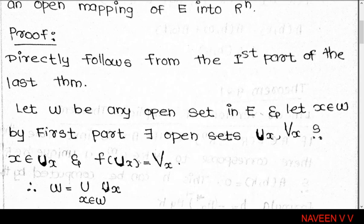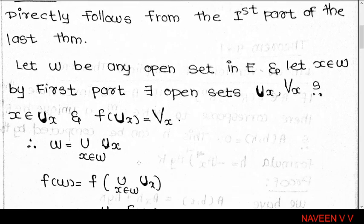Theorem 9.25 proof: f'(x) is invertible for all x belonging to A. By the Inverse Function Theorem, there exist open sets U and V in Rⁿ such that A belongs to U, B belongs to V, f is one-to-one on U, and f(U) equals V.